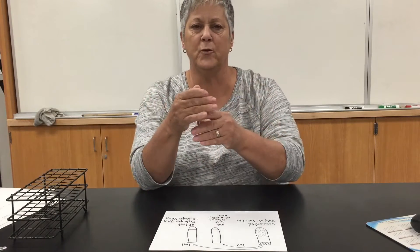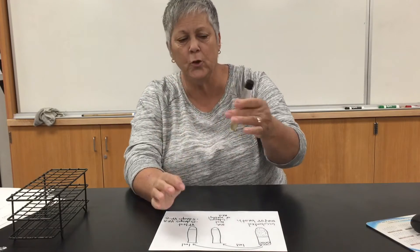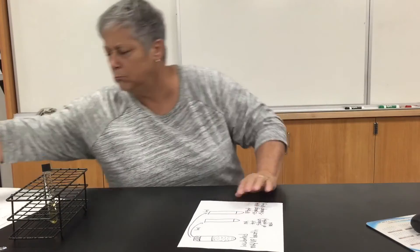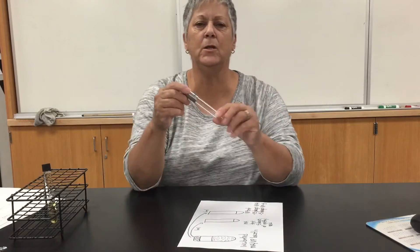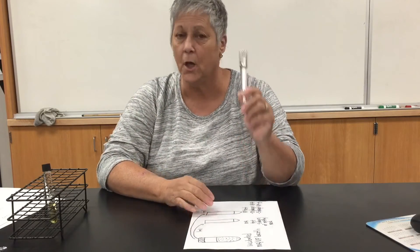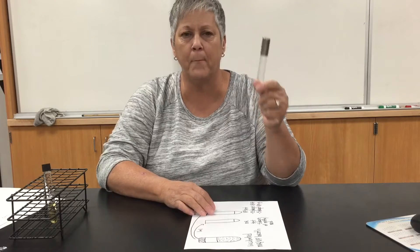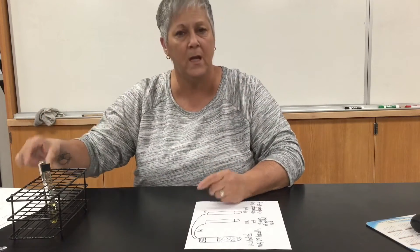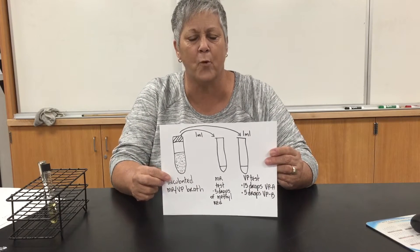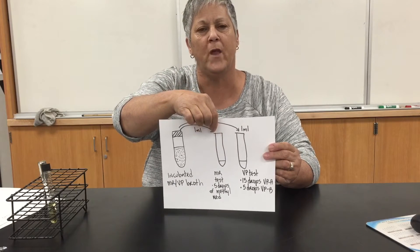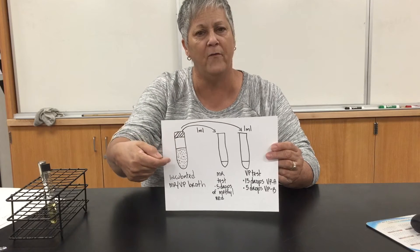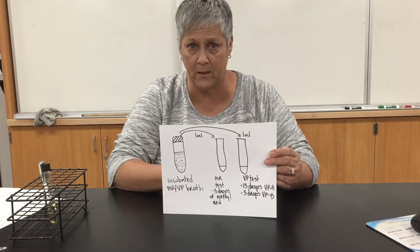After incubation, the broth should be nice and turbid. Agitate the tube to stir up the contents. You will need two clean test tubes with a Morton cap per microorganism tested. You'll do the MR test in one of these tubes and the VP test in the other. Use a sterile pipette to transfer one mil of the incubated broth into each of the two tubes.